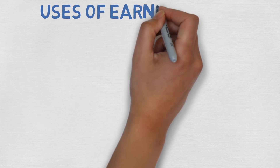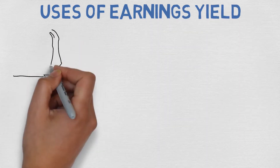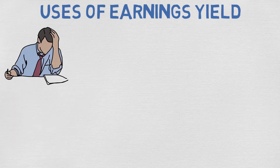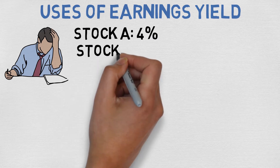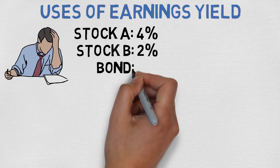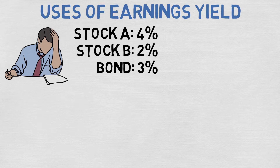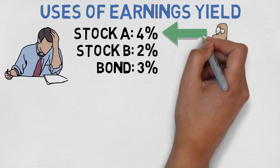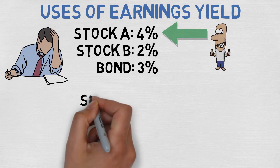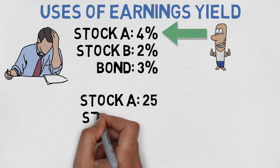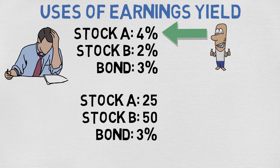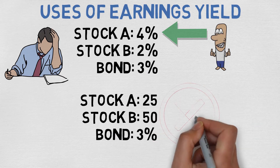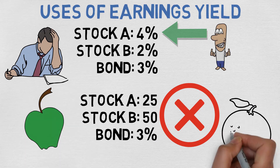So why would you use earnings yield instead of price to earnings ratio? Earnings yield makes comparing different investments easier. If you have the option to invest in stock A with 4% earnings yield, in stock B with 2% earnings yield, or in a bond with 3% earnings yield, you can easily compare which one is the best investment. You can see that stock A has the best earnings yield. If you only used P/E ratio, you would be comparing a P/E of 25 and a P/E of 50 with a 3% earnings yield, which doesn't tell you anything because you can't compare them with each other. It's like comparing apples and oranges.